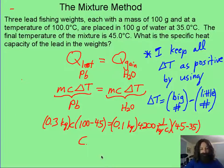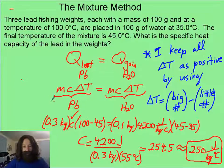There, I filled in my numbers. Notice that I have a 100 minus the 45 degrees here for the lead, and then I've got the 45 minus the 35 degrees for the water on this side. Then it's just a matter of solving for the c of lead. And hopefully you worked out the rest of the numbers and you ended up with a specific heat capacity of lead in the units of joules per kilogram per degree Celsius.